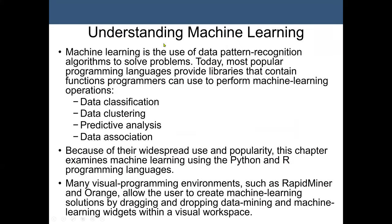We start with machine learning. Machine learning is the use of data pattern recognition algorithms to solve problems. The goal of machine learning is using data and some algorithms on the data to perform a task. Today, most popular programming languages provide libraries with functions programmers can use to perform machine learning operations, such as data classification, data clustering, predictive analysis, and data association.